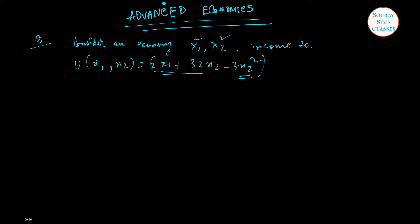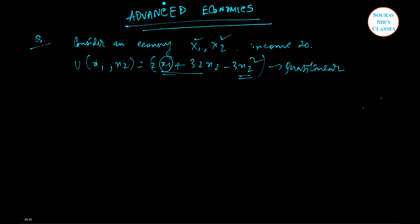The utility function is quasi-linear type. It is called quasi-linear because with respect to x1 it is linear, and with respect to x2 we have a linear part and a nonlinear part as well. Now let's focus on the questions.